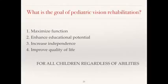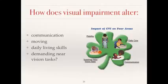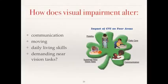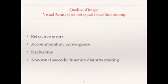The goals of pediatric vision rehabilitation are to maximize function, enhance educational potential, increase independence, and improve quality of life regardless of each child's abilities. Visual impairment can affect the child's daily life, illustrated by the four-leaf clover of vision: the child's vision is used for development of communication skills, moving in space, daily living skills, and other sustained near vision tasks. The quality of image for the child with visual impairment from optic nerve hypoplasia may also be affected by refractive errors, accommodation and convergence, strabismus, and abnormal saccade function.